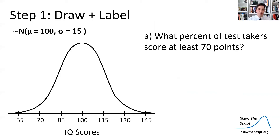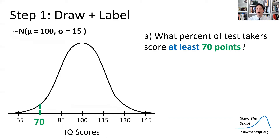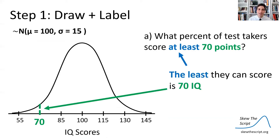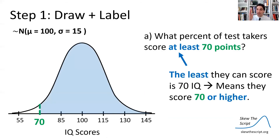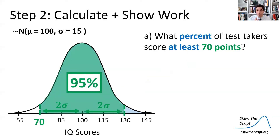What percent of test takers score at least 70 points? I've drawn and labeled this normal curve — labeled as normal with a mean of 100 and a standard deviation of 15, with that bell shape centered at 100 with tick marks for the standard deviations, labeled as IQ scores. Now I want to find the percent that score at least 70 points. 'At least' means the lowest score they can have is 70. So I'm drawing a line at 70 IQ and shading everything above it. Now, 70 is two standard deviations below the mean — going from 100 down 15 points is 85, down 15 again is 70. Within two standard deviations of the mean, we have 95% of the data.